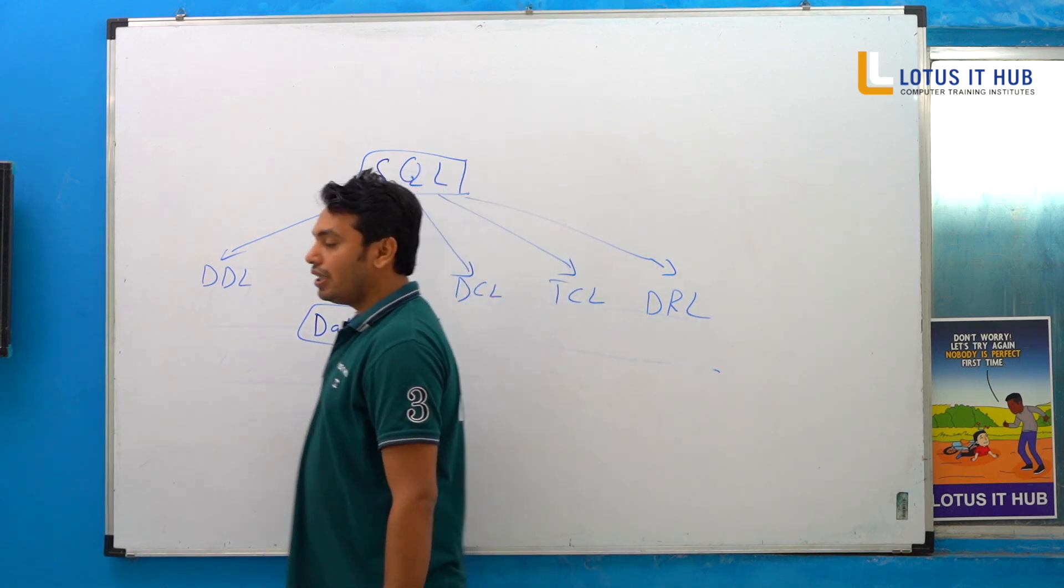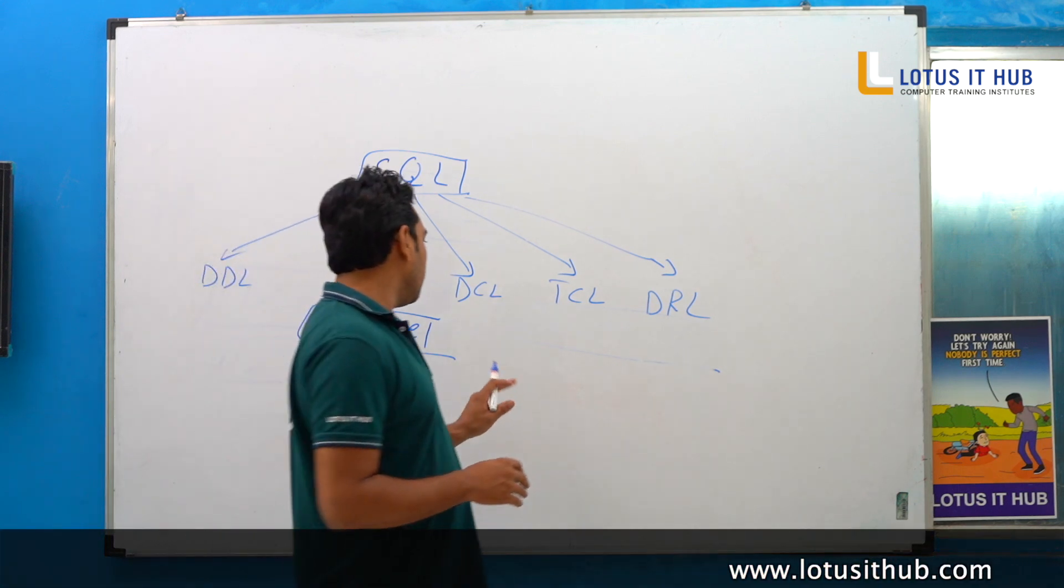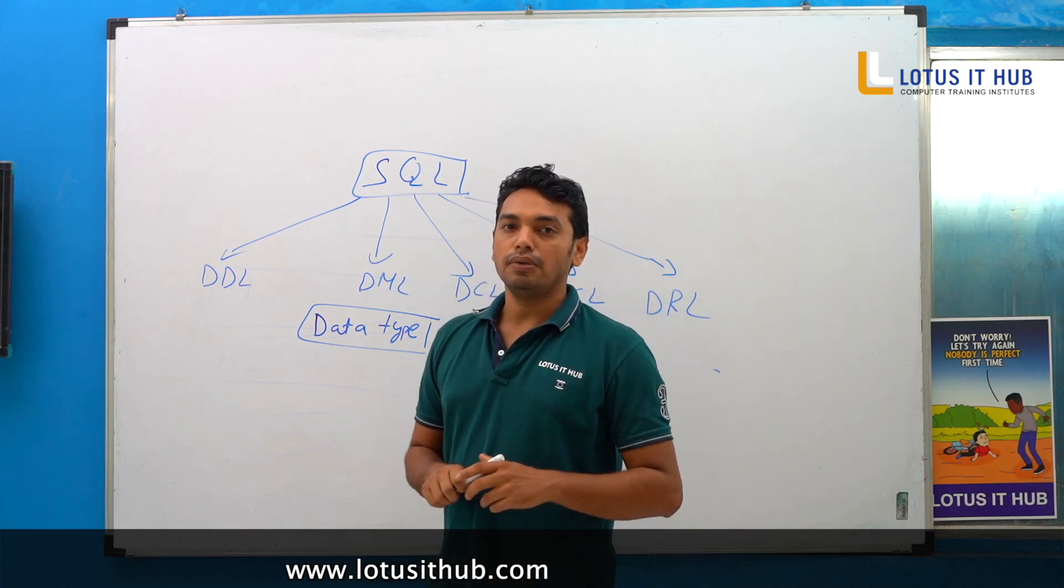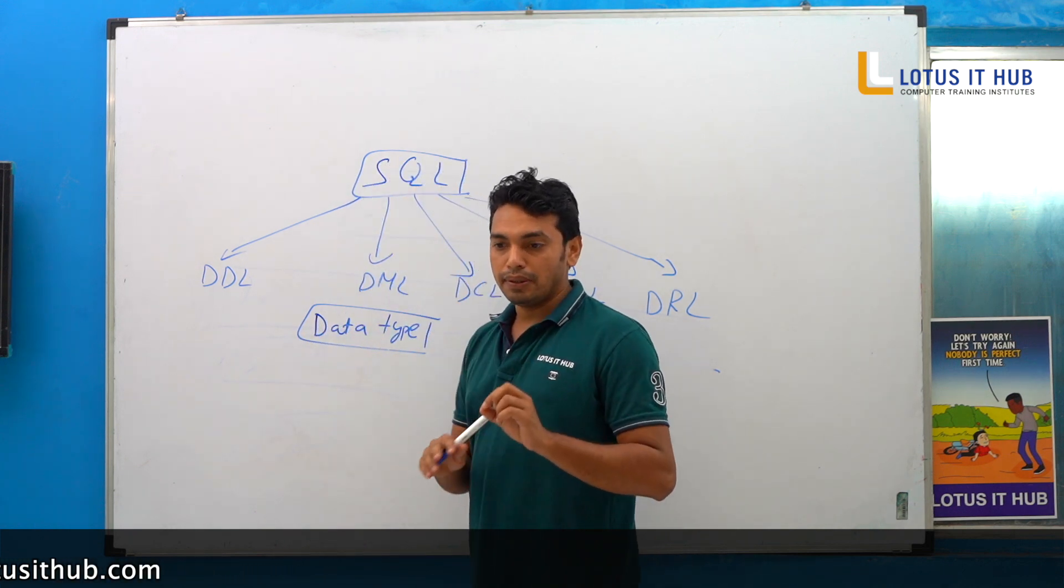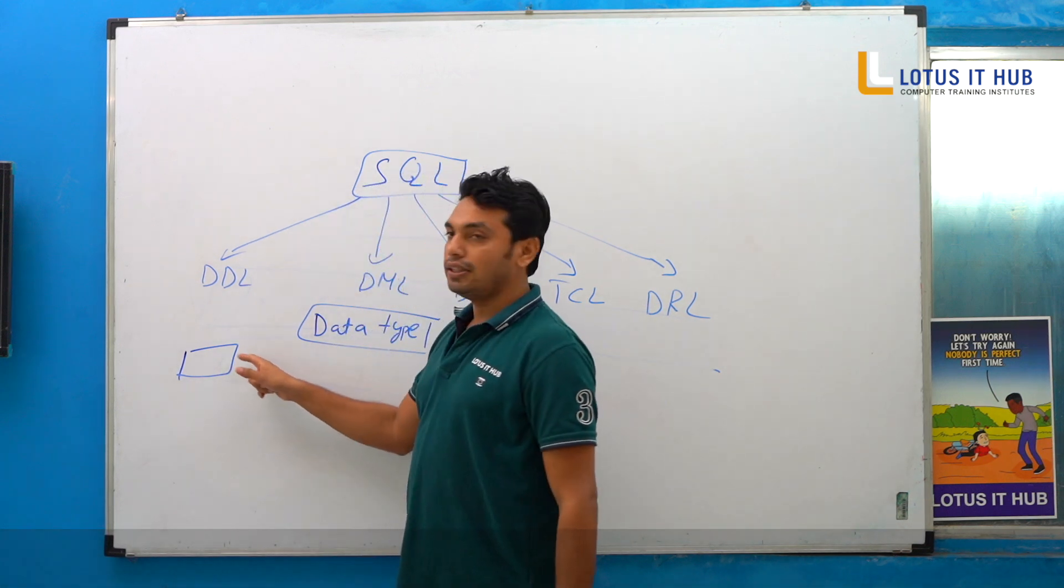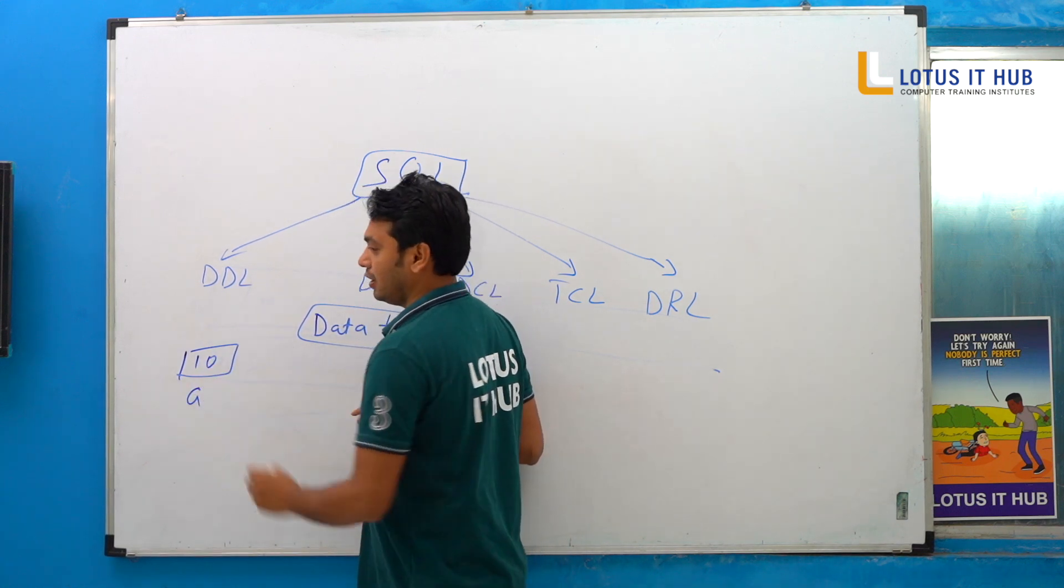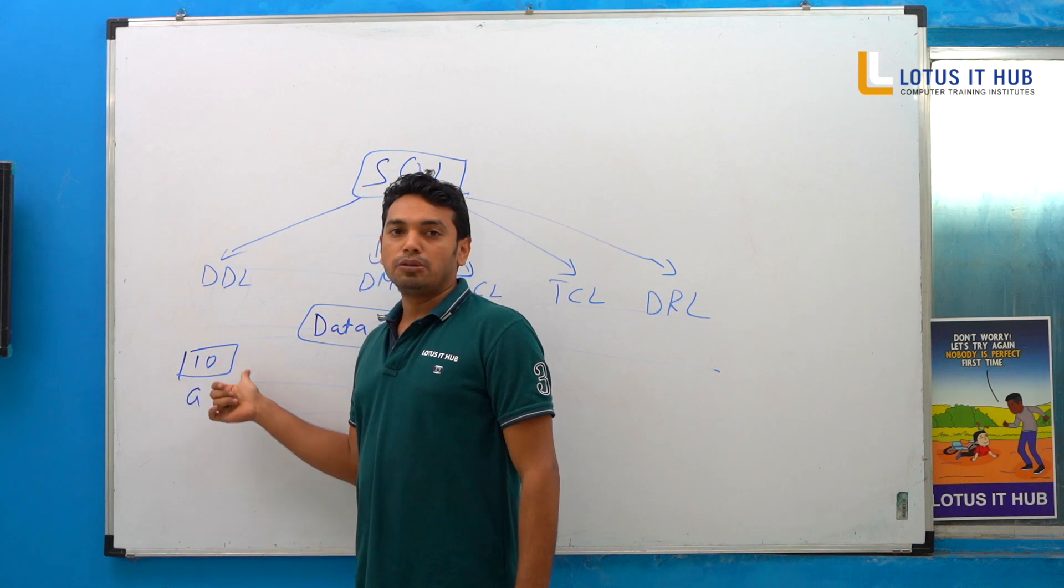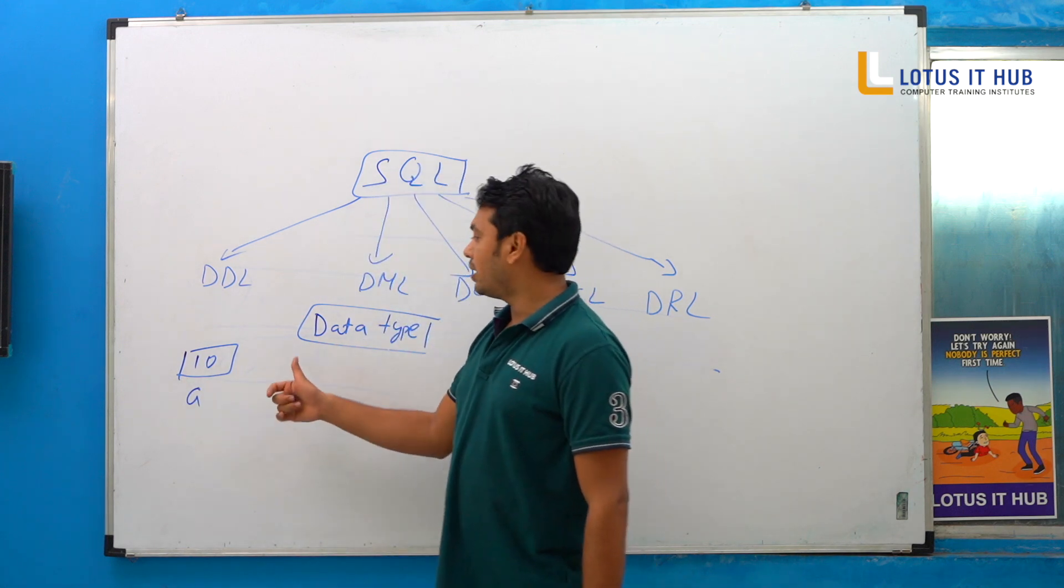First we have written here data type. What is data type? Suppose in case if we want to store any integer number, data type is our memory where we are storing some data. Suppose the variable name is A, where we are storing some data. Data type is used for memory allocation, which stores some data. Maybe this is allocating two bytes, four bytes. This area is variable, this variable is stored, and this value is stored. This is called data types.